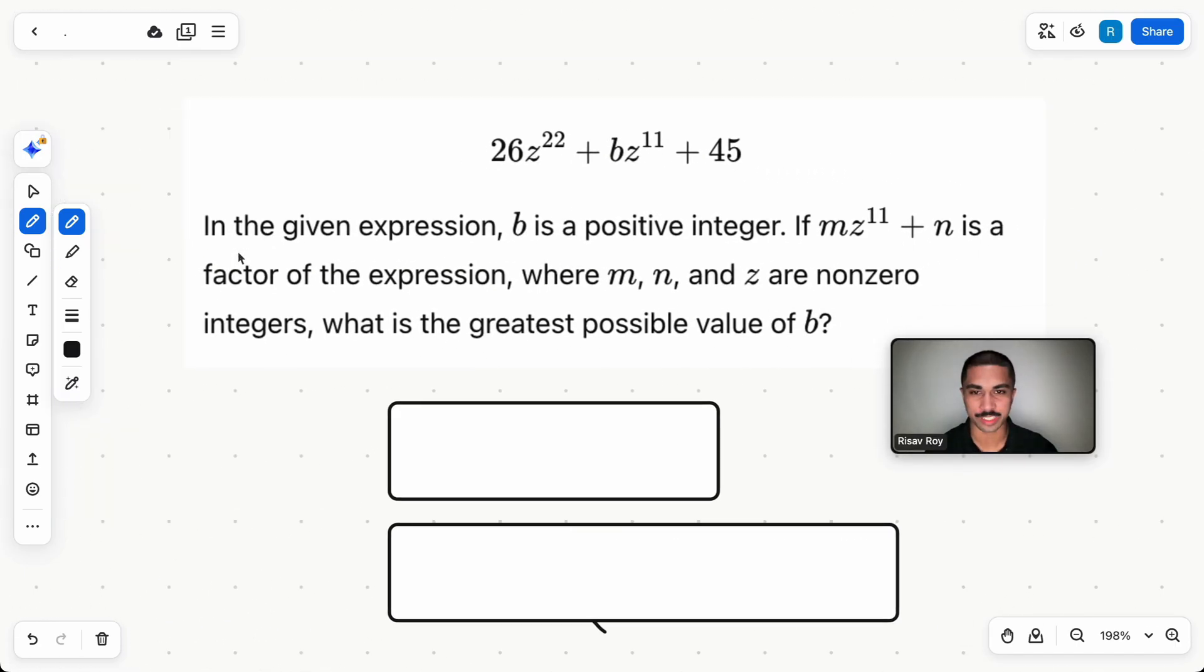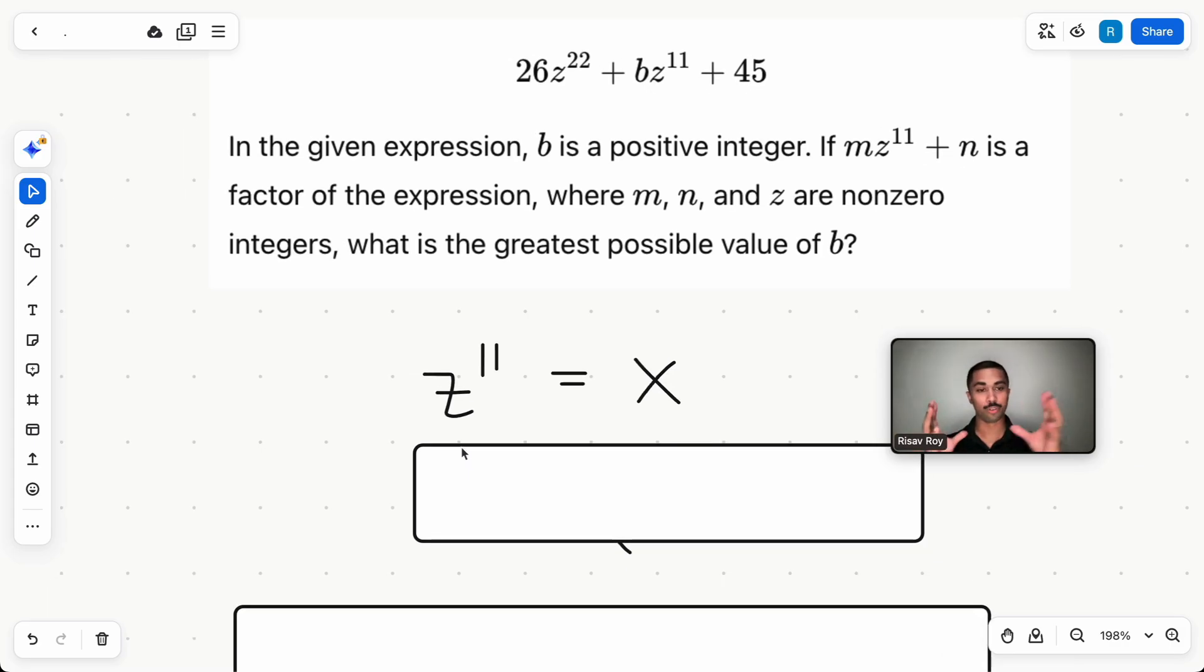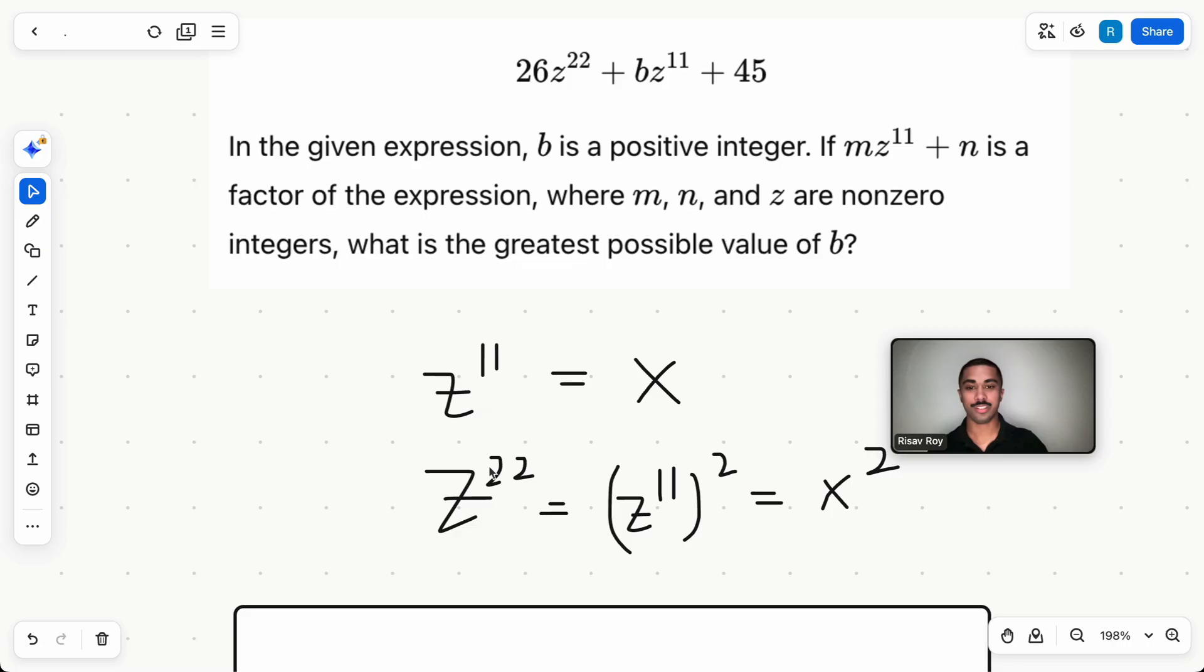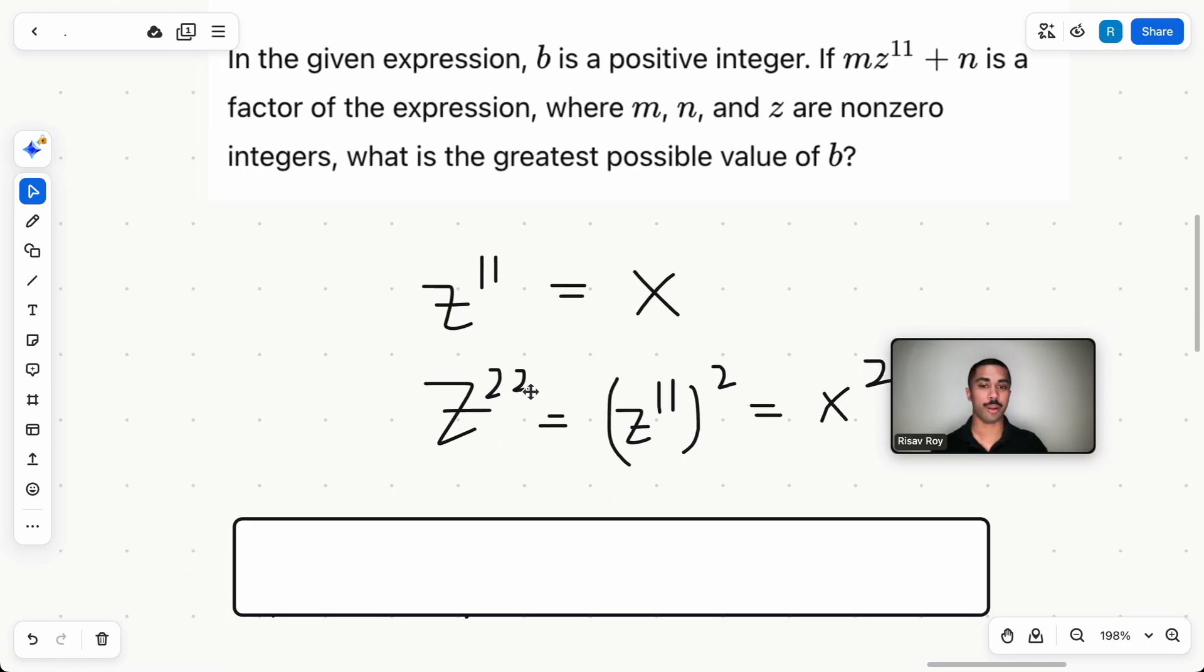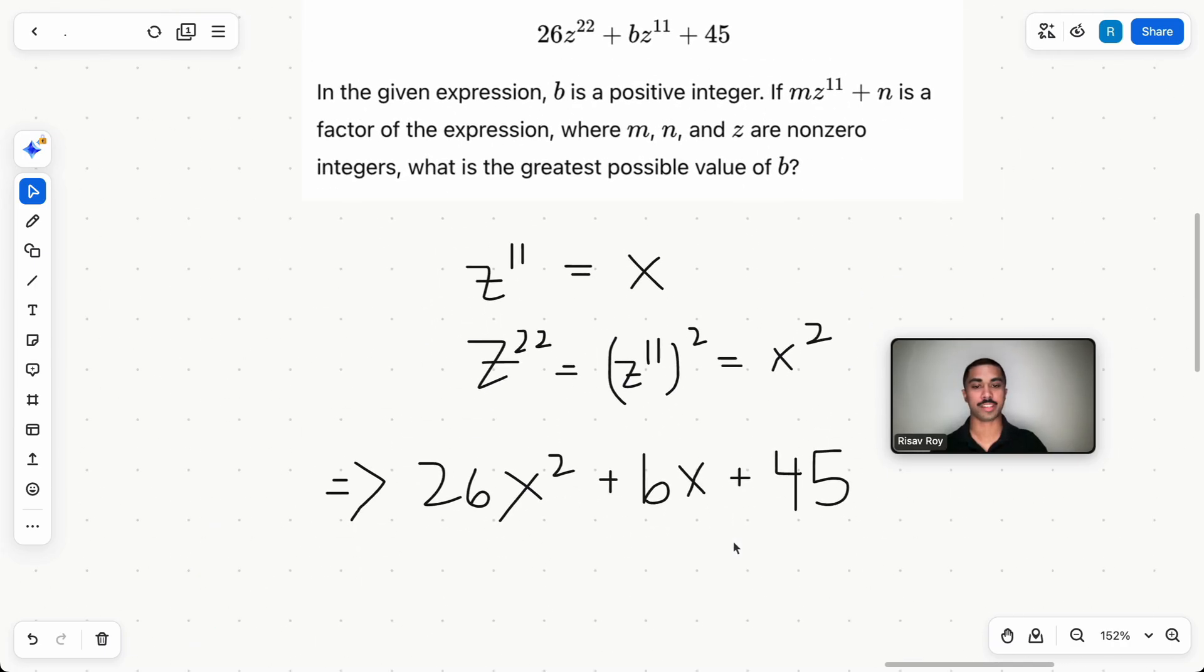All right, let's move on to 26z to the power 22 plus b times z to the power 11 plus 45. In that given expression, b is a positive integer. If m times z to the power 11 plus n is a factor of the expression where m, n, and z are non-zero integers, what is the greatest possible value of b? I don't want you to get scared of these big numbers. They don't mean anything. Here's why. Just replace z to the power 11 with x. Variables can hold anything, including other variables. So if x equals z to the power 11, then z to the power 22 is just z to the power 11 squared, which is x squared. So just replace this entire thing with x and x squared.